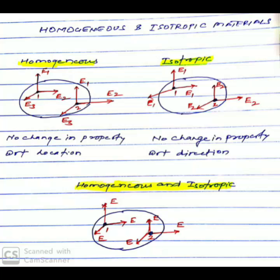The first diagram is for homogeneous material. We can observe that at two different locations, one and two, the property is not changing with respect to location. However, the property is different in different directions. Such material is known as homogeneous, in which there is no change in property with location, but it may change with respect to direction.